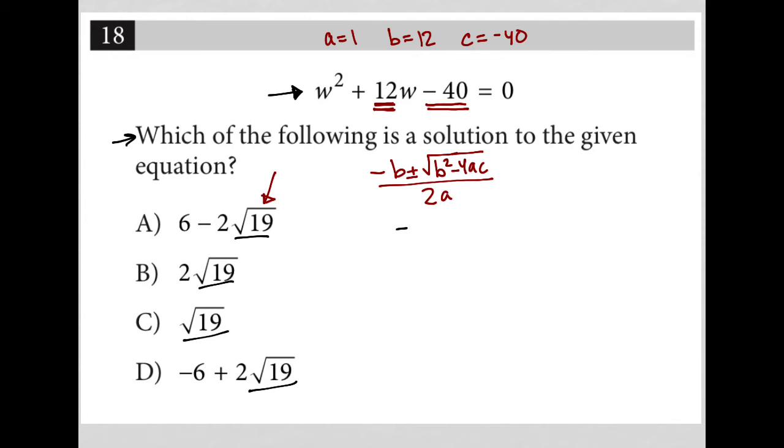So negative b becomes negative 12, plus or minus. b squared is 144. 12 squared is 144. Minus 4 times a, which is 1, so it's just going to be 4. And then times c, which is negative 40. So I'll just put that there, negative 40, all over 2a. Again, a is 1, so no need to write the times 1. So it would just be 2 there.